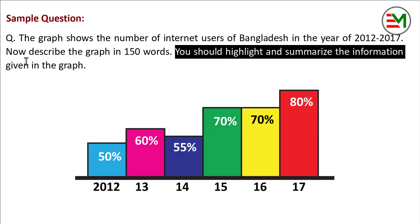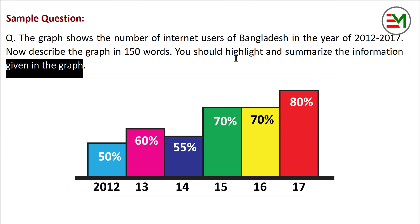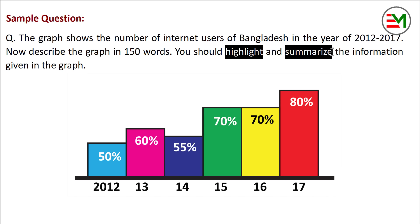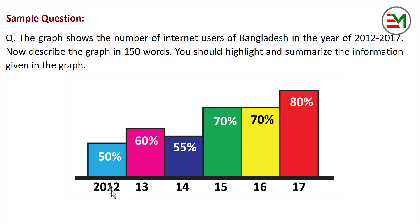You should highlight and summarize the information given in the graph. In 2012, internet users were around 50%; in 2013, around 60%; in 2014, around 50%; and it later shows 80%.